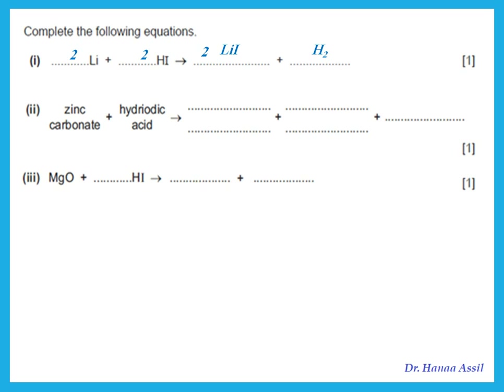If the equation starts as a word equation, complete it with words — not symbols. Zinc carbonate plus hydroiodic acid: this is a carbonate reacting with an acid, so it gives a salt plus carbon dioxide plus water. The salt here is zinc iodide, so the products are zinc iodide plus carbon dioxide plus water.